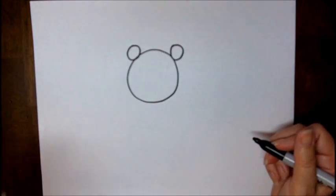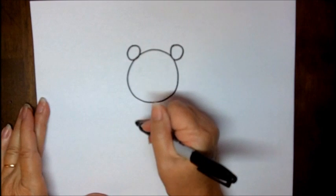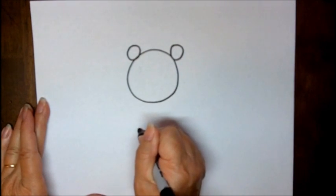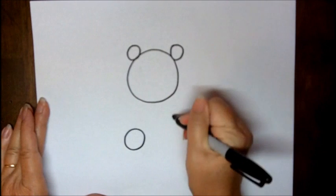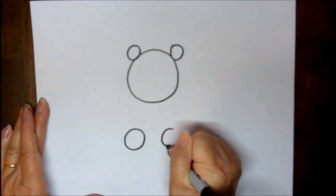And then right underneath his ears, maybe about down to right here, we are going to make a little bit of a larger circle. These are going to be his feet.